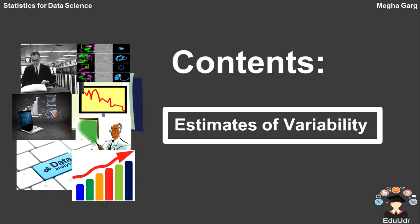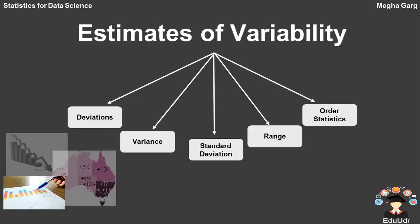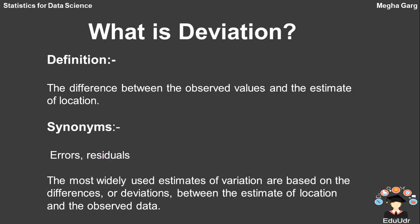Today we will study about the estimates of variability. Location is just one dimension in summarizing a feature, which we have already discussed. The second dimension we will discuss is variability, also known as dispersion — it measures whether the data values are tightly clustered or spread out. Key terms for variability are deviations, variance, standard deviation, range, and order statistics. Let's start with the first topic: deviation. The definition of deviation is the difference between an observed value and the estimate of location, and its synonyms are errors and residuals.